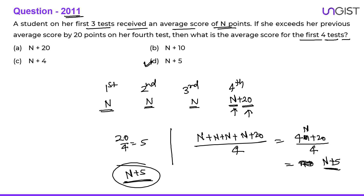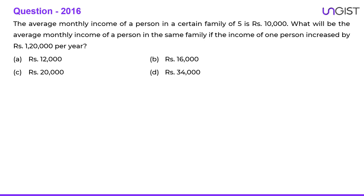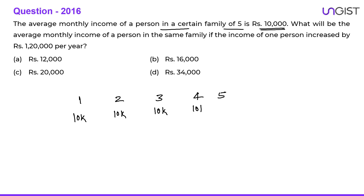In 2016 the question was: the average monthly income of a person in a certain family of 5 is ₹10,000. There are 5 persons in the family and the average monthly salary is ₹10,000. The best case assumption is that the salary of all persons is ₹10,000.